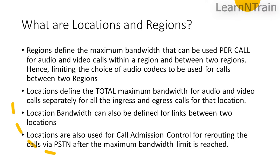What are locations and regions? Regions define the maximum bandwidth that can be used per call for audio and video calls within a region and between two regions, hence limiting the choice of audio codecs to be used for calls between two regions. Locations define the total maximum bandwidth for audio and video calls separately for all the ingress and egress calls for that location. Location bandwidth can also be defined for links between two locations. Locations are also used for call admission control, for rerouting the calls via PSTN after the maximum bandwidth limit is reached.